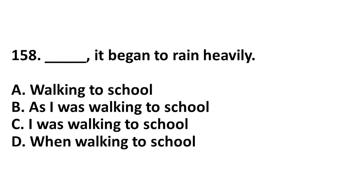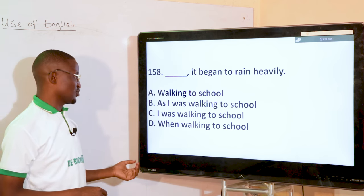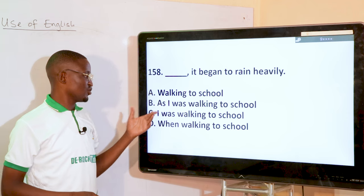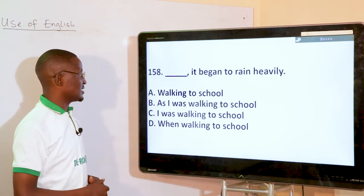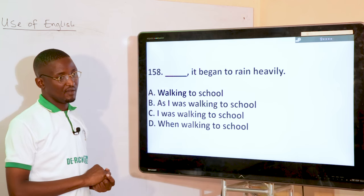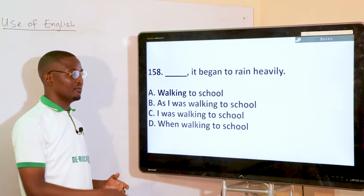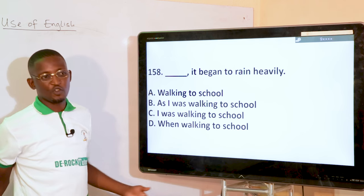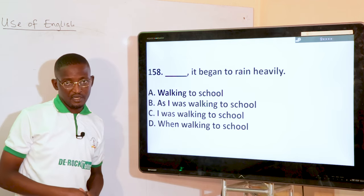Dash, it began to rain heavily — walking to school. It would be redundant to include 'I' — so it is needless and brings redundancy. Walking to school, it began to rain heavily. It's like saying 'on getting home, I discovered this' — it would be needless to say 'when I got home.' You just have to go with the gerundial form: 'Walking to school, it began to rain heavily.' That is option A.